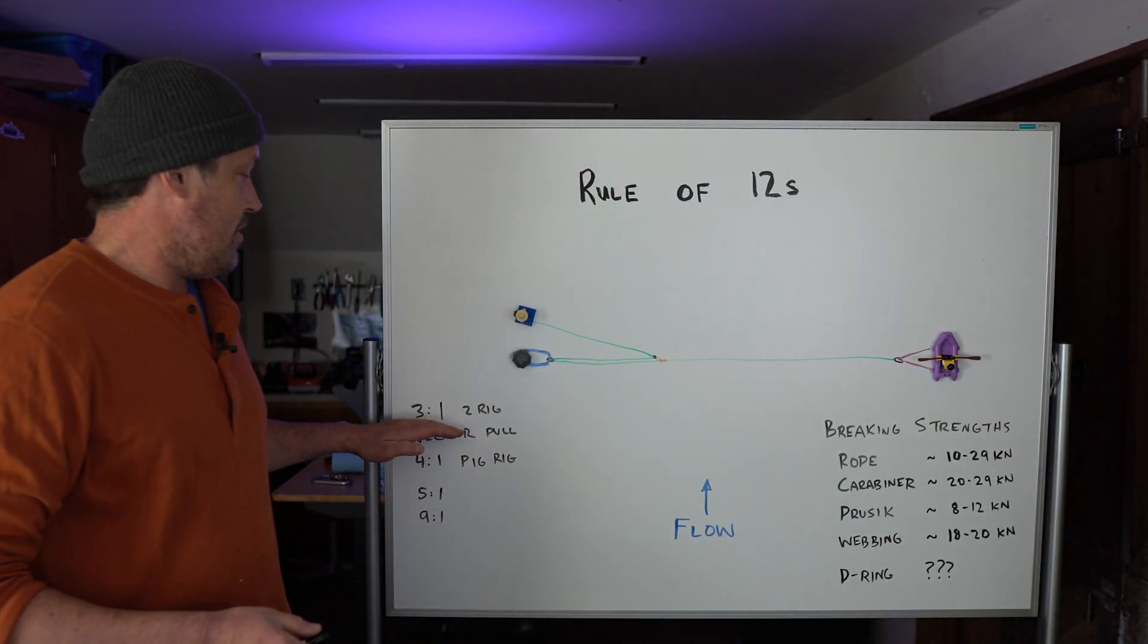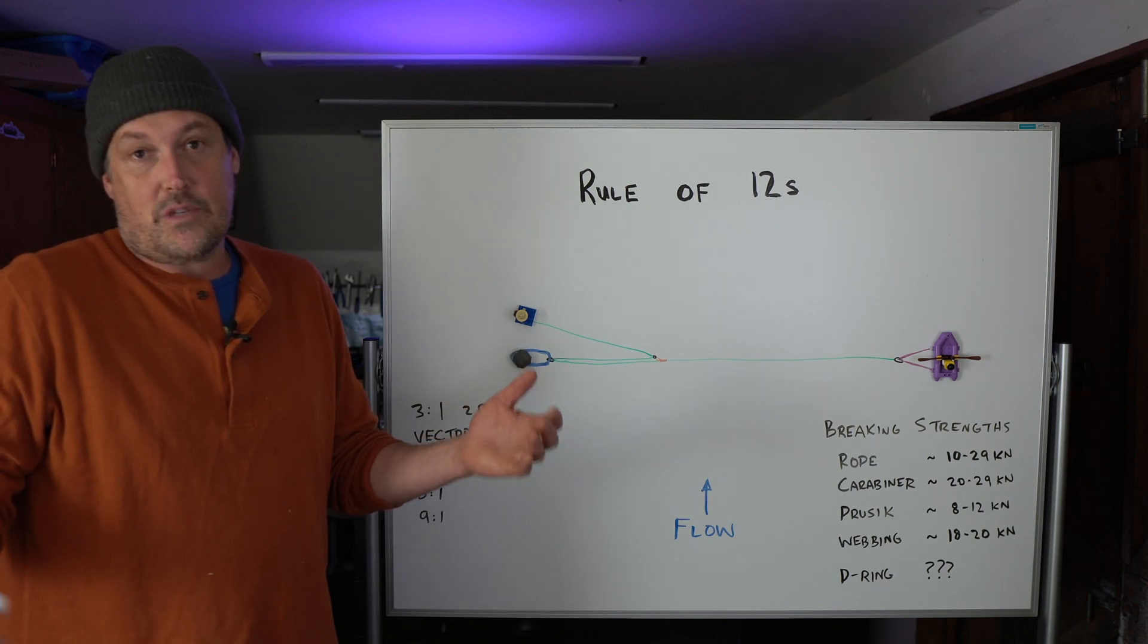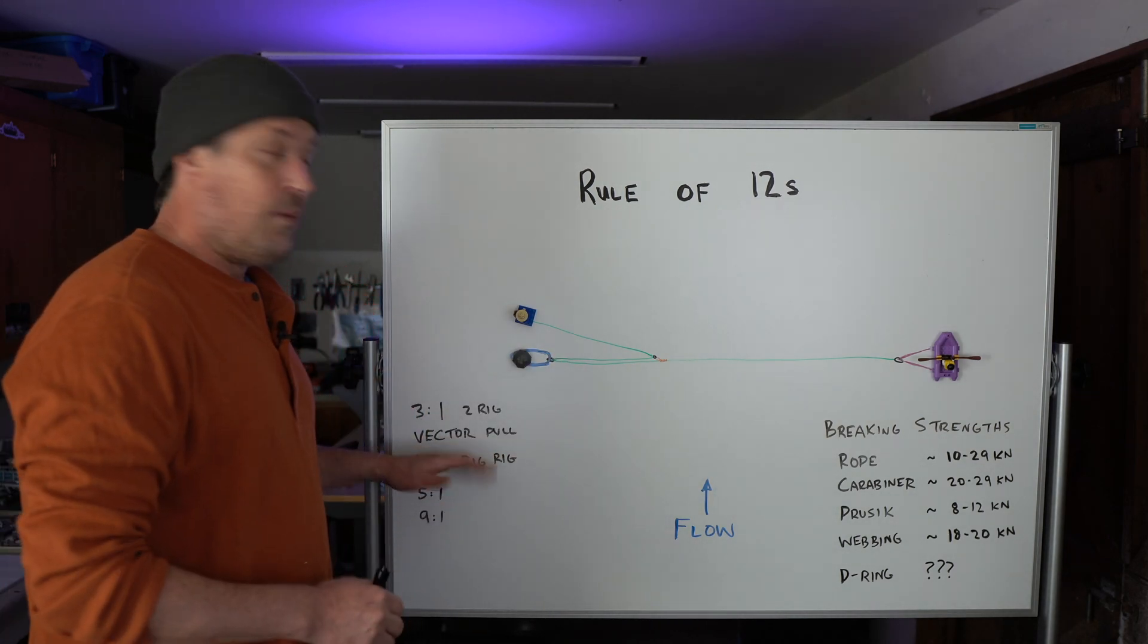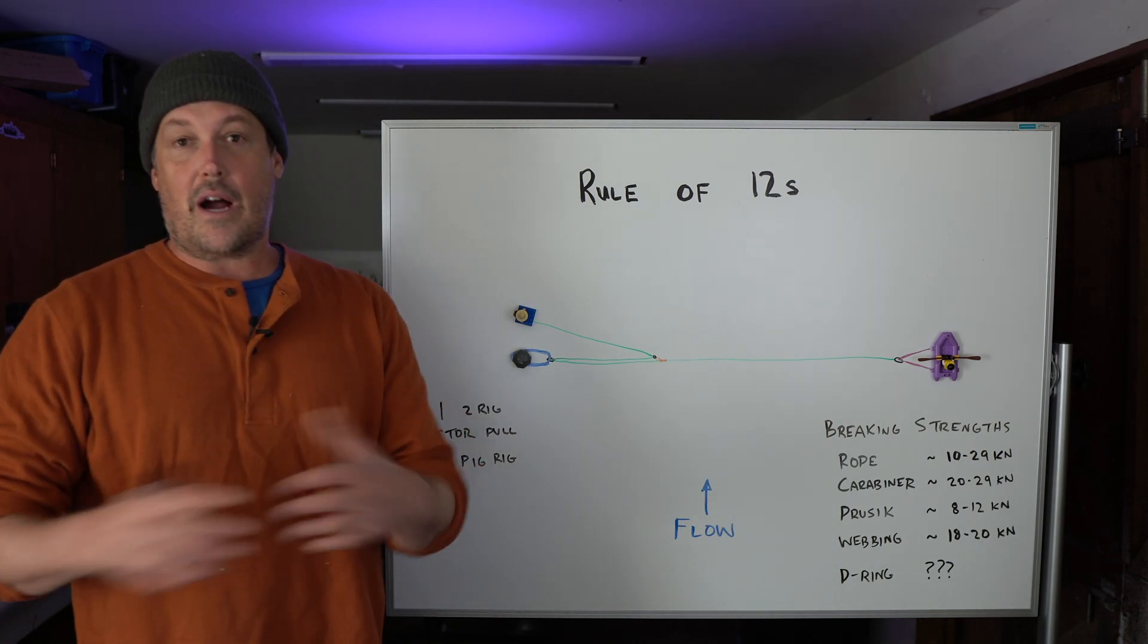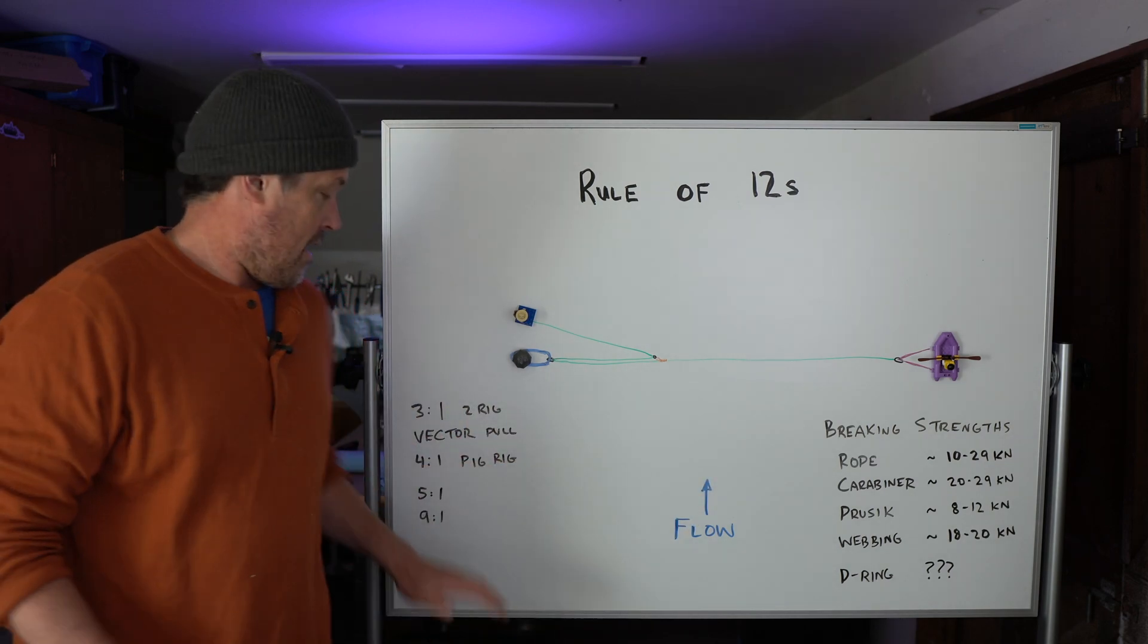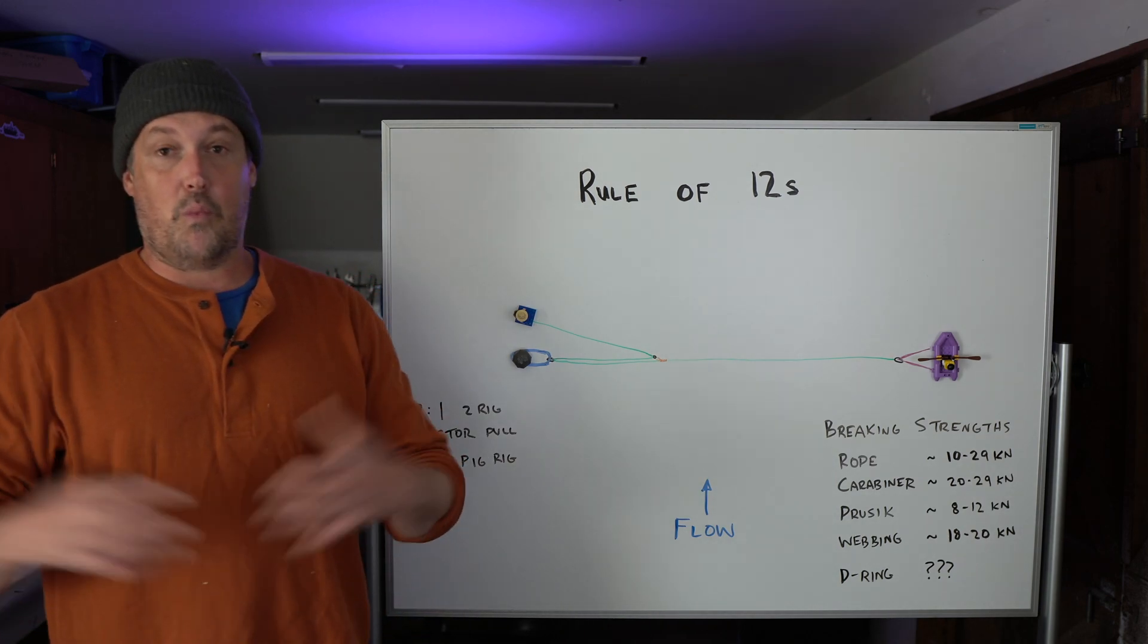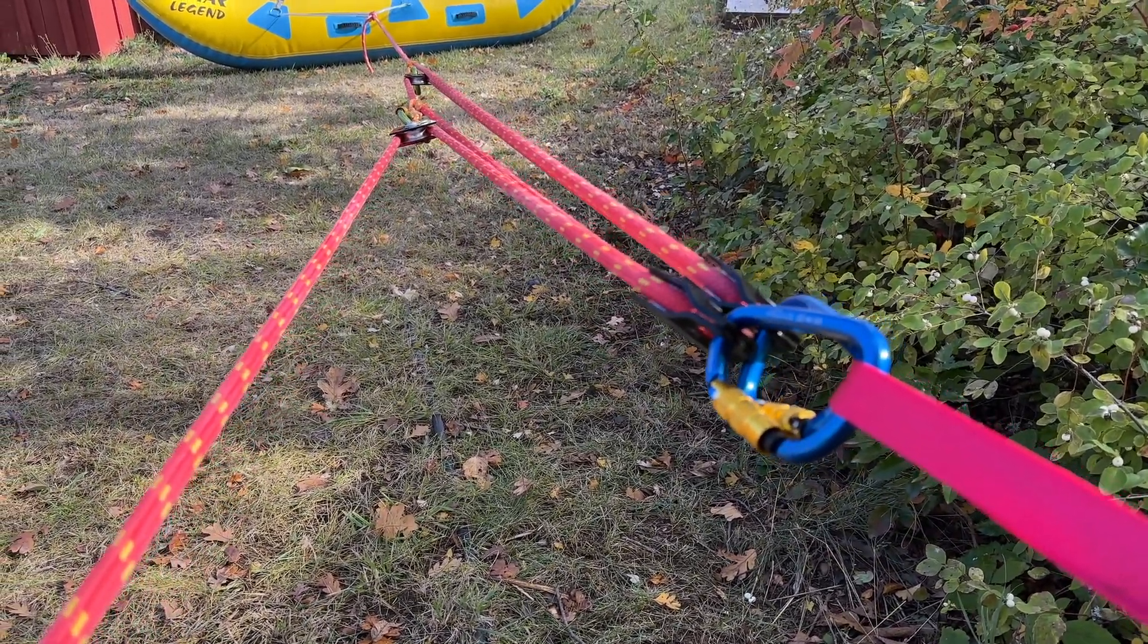For example, if I'm using a 3 to 1 Z rig, a very common thing, I wouldn't pull with more than four people because four times three is 12. To me, a vector pull is basically a three to one. I'm not going to say why in this video and you may disagree with me, but I wouldn't pull with more than four people on a vector pull. A four to one pig rig, I wouldn't use more than three people because three times four is 12. A five to one is a cool system. If you only have a few people to stay below 12, I would only pull with two people. And nine to one, I'd only pull with one person. So if I pull two people on nine to one, I get to 18, which violates the rule of 12s.